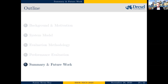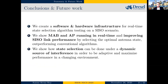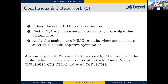In conclusion, the main contributions of this paper are: first, we created a software and hardware infrastructure for real-time antenna state selection algorithm testing. Second, we demonstrated that multi-armed bandit and adaptive pursuit can run in real time and improve link performance by selecting the optimal antenna state, outperforming baseline algorithms like random selection and epsilon-greedy. Third, we showed that for dynamic interference conditions, adaptive pursuit performs well while multi-armed bandit struggles to adapt.